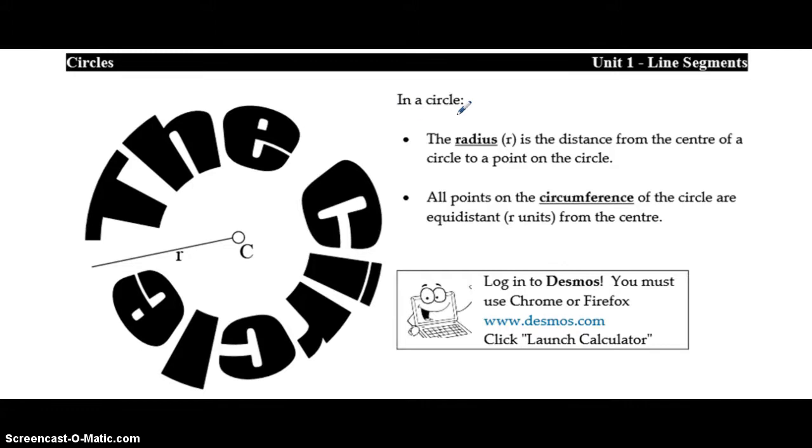A couple of things we need to go over before we start is two words in a circle. First of all, the radius. The radius is the distance from the center of the circle here to the circumference of the circle here, which is the outside of the circle. That distance is called the radius.